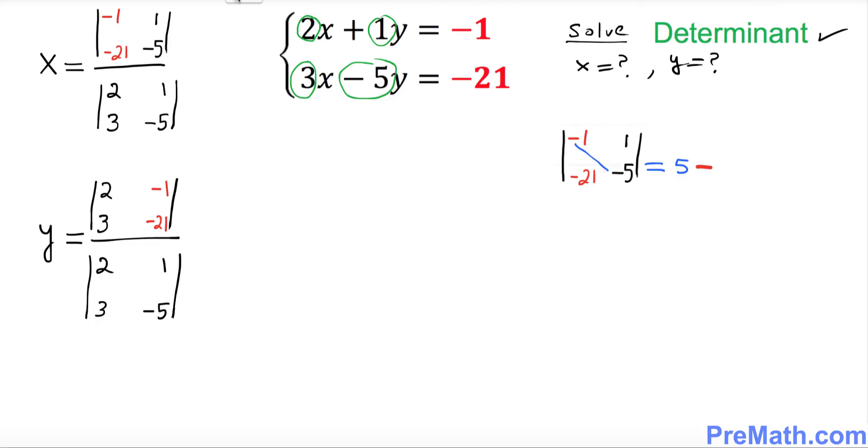And then I want you to cross multiply the other way around. So 1 times negative 21 equals to negative 21. Do you see that one? Now when you have two negatives next to each other they become positive. So we got 5 plus 21 equal to 26. So the value of this top determinant turns out to be 26.